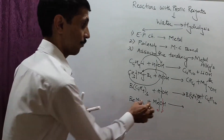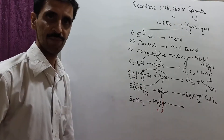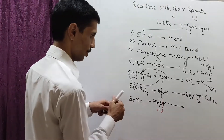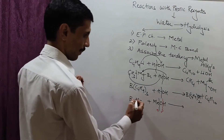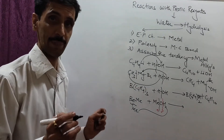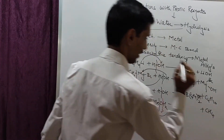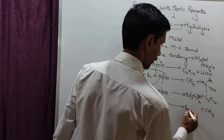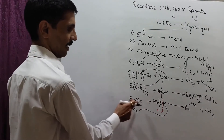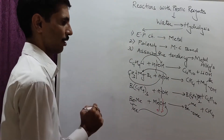The correct bond breaking: the Me-OH bond of methanol breaks, giving a methoxy group (OMe) — not a methyl and a hydroxide. Only one Be-Me bond breaks; that methyl group combines with H⁺ to give methane (CH₄). The remaining product is Be(Me)(OMe) — beryllium with one methyl and one methoxy group.